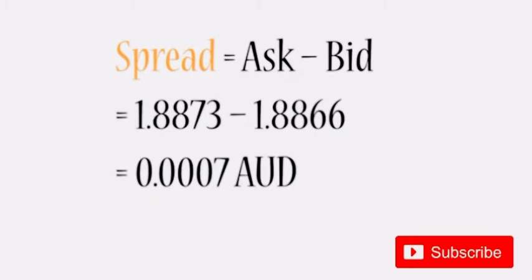Let's go back to our example of the spread. We calculate the spread as ask minus bid for the Australian dollar, and it was 0.0007 Australian dollars.